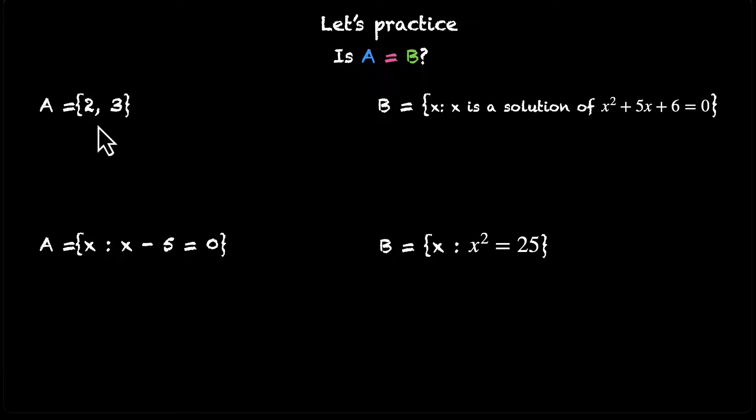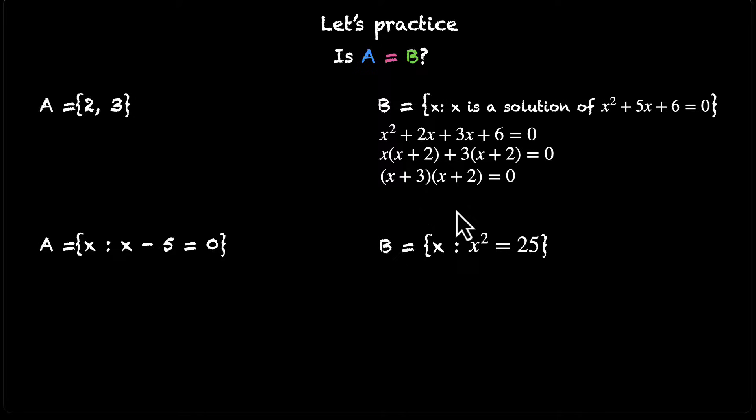Okay. So there's nothing to do here for A, but we have to solve this quadratic for B. So let's do that. X² + 5X + 6 = 0. And you can split the middle term. You have X² + 2X + 3X + 6 = 0. And you can take X common. And you can take 3 common. So you have X times (X + 2) plus 3 times (X + 2).